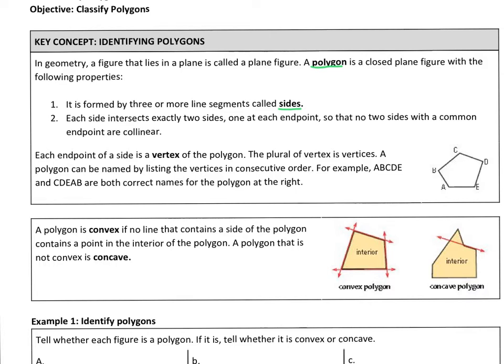So each side, when you look at this polygon to the right here, look at BC. BC connects with AB and DC. So that's why that is a polygon - each side connects with two other sides.